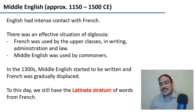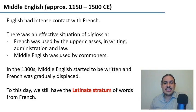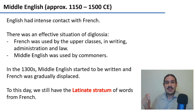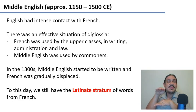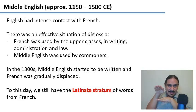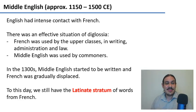In 1066, Britain was conquered by French kings, and French became the language of the upper classes for about 200 years. Britain was effectively in a state of diglossia: French was used by the upper classes for writing, administration, and law, while English was the language of commoners and everyday things. This is why to this day we have a Latin-derived stratum where our formal words are French-like and our common words are English-like.